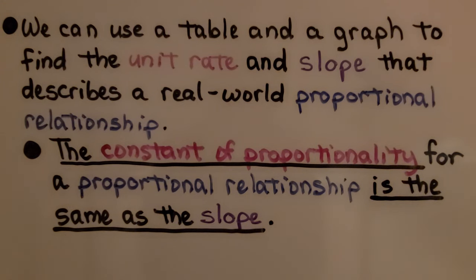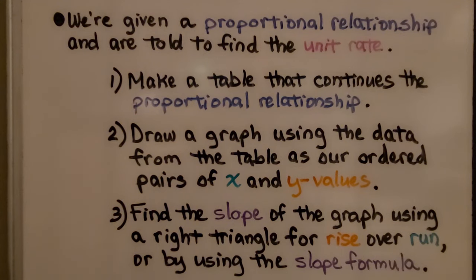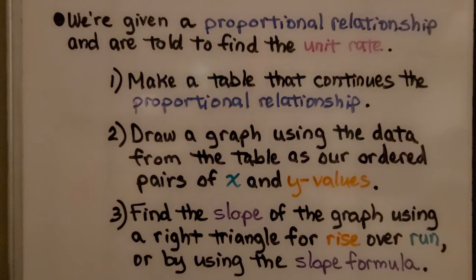We can use a table and a graph to find the unit rate and slope that describes a real-world proportional relationship. The constant of proportionality for a proportional relationship is the same as the slope. For graphing proportional relationships, these are the steps. We're given a proportional relationship and are told to find the unit rate. First, make a table that continues the proportional relationship. Second, draw a graph using the data from the table as our ordered pairs of x and y values. Last, number three, find the slope of the graph using a right triangle for rise over run, or by using the slope formula.